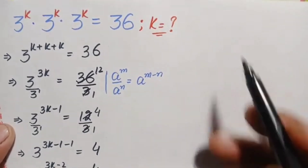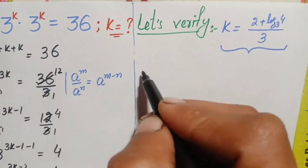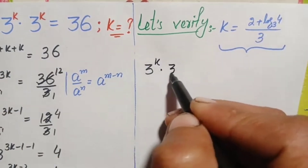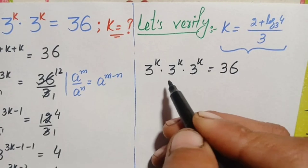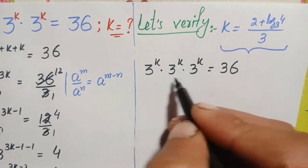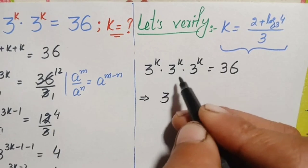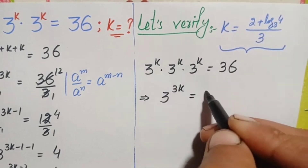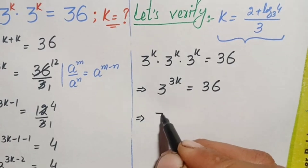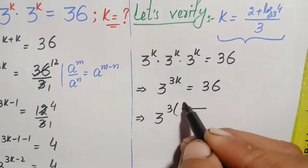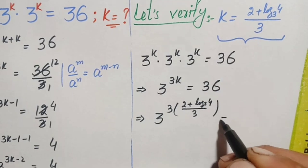To verify, we substitute back into the original problem: 3^k × 3^k × 3^k = 36. Since the bases are the same, we add the powers to get 3^(3k) = 36. Substituting k = (2 + log₃4)/3, the left hand side becomes 3 raised to power 3 times (2 + log₃4)/3.